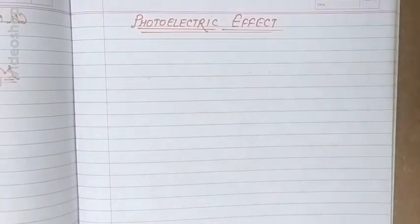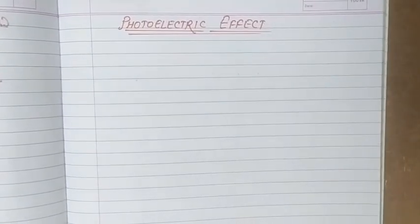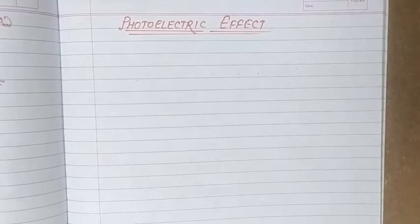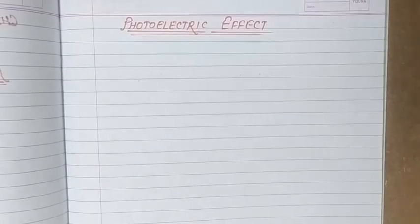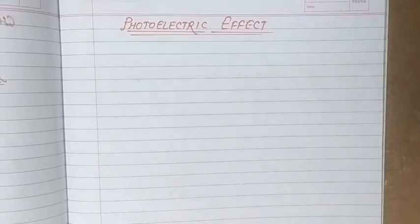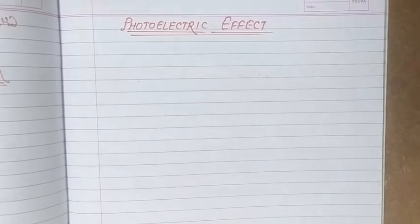Hello students, this video is about the topic photoelectric effect. In the previous video we studied about work function of a metal. By work function we mean the minimum energy required by the metal so that the free electrons present in the lattice of that metal can come out of the metal surface. This minimum amount of energy required is called work function and it varies from metal to metal.